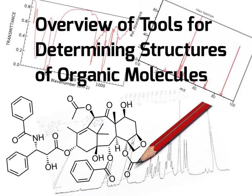Additionally, we need these tools for determining organic structures to be confident about what we have synthesized in organic reactions. Throughout the organic one class, we spend a lot of time talking about organic reactions and predicting the major organic products of those reactions. But in reality, rather than just predicting the structures of organic products, in order for those compounds to be useful, we need to be able to confirm that we have indeed synthesized that predicted product. These analytical tools are very useful for those types of applications as well.